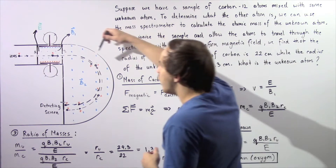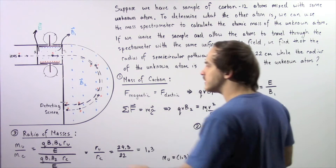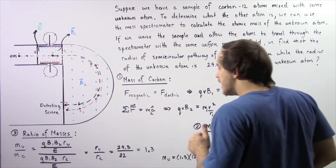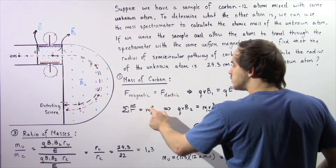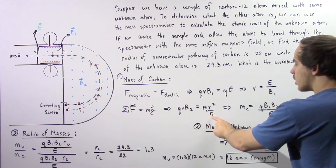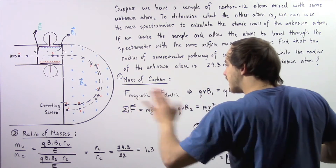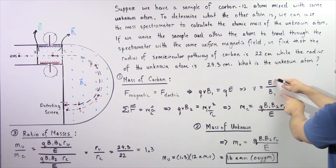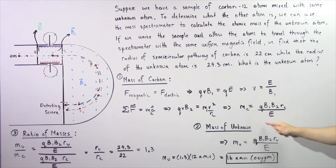Now let's continue. Suppose the carbon atom is traveling through the semicircular region where there is no electric field, but there is a magnetic field B2. Using Newton's second law, the net force on the carbon atom equals its mass MC times its centripetal acceleration, which is V squared over RC, where RC is the radius of the carbon atom's path. The left side becomes Q times V times B2. Substituting V = E/B1 and solving, we get the mass of the carbon atom.